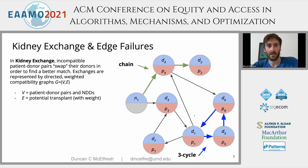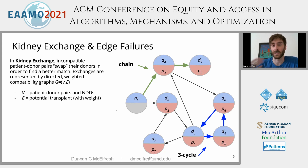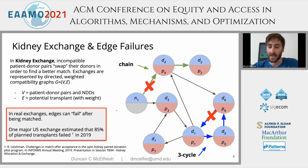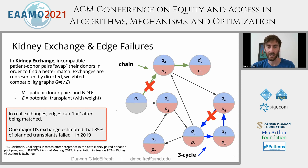Exchanges typically match patients and donors according to cycles and chains within this directed graph, where sometimes chains are initiated by non-directed donors who are willing to give away a kidney and start a cascade of transplants. The main issue in real exchanges is that these planned transplants — these edges — can fail after we match them. One major US-based exchange we work with found that in 2019, roughly 85% of their planned transplants actually failed before going to transplantation. This is a huge cause of inefficiency in real exchanges.